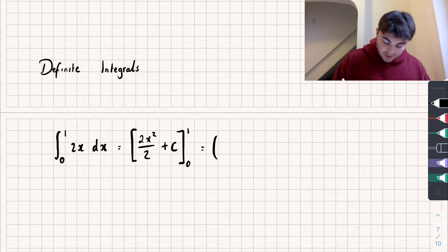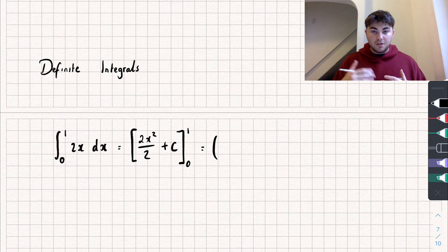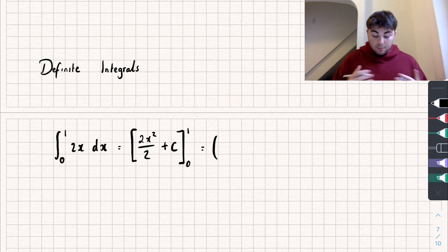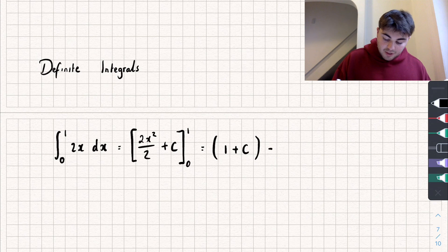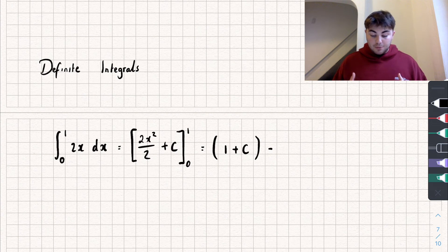So if we substitute in 1 we're going to get well 2 multiplied by 1 squared is 2 divided by 2 gives me 1 so we get 1 plus the constant of integration and then we subtract from that the same thing but where we substitute in 0.